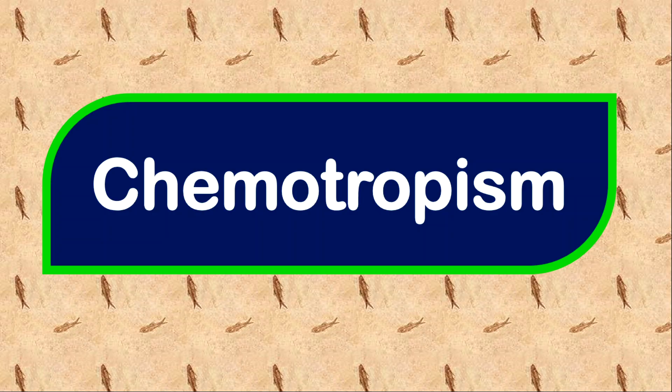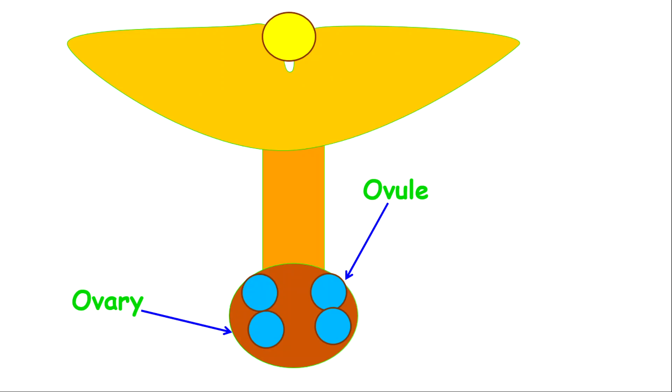For chemotropism, it's a response to chemicals. Plants will need to get certain chemicals, like roots may want to obtain chemicals from the soil. But also, uniquely, inside of the flower of plants, a pollen tube will grow towards the ovary to release sperm cells to fertilize the ovule. The pollen tube will respond to a surge of chemicals produced inside of the ovary, causing a chemical gradient. Hence, the pollen tube will grow towards the ovary by responding to the chemicals produced inside of the ovary. Very unique and very useful response.